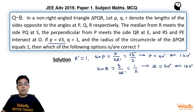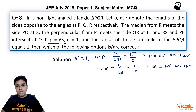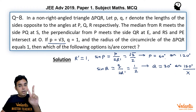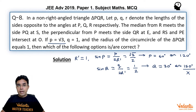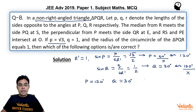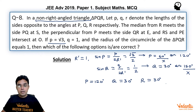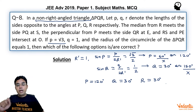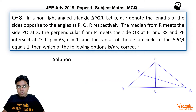If Q = 150°, adding either value of P exceeds 180°, so Q = 150° is ruled out. If Q = 30° and P = 60°, the two angles sum to 90°, making the third angle 90°, but the triangle is stated to be non-right-angled, so P = 60° is also ruled out. Therefore P = 120° and Q = 30°, giving R = 30° by the angle sum property — an isosceles triangle with equal angles at Q and R.